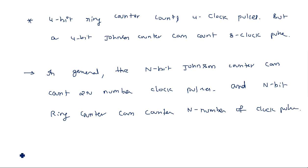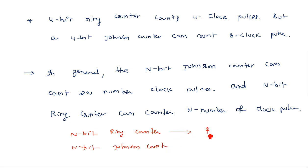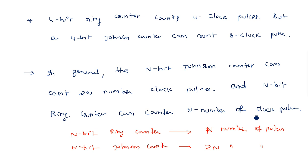This is very important: an n-bit ring counter counts n clock pulses, and an n-bit Johnson counter counts 2n clock pulses. Both are also known as shift register counters because a shifting operation is performed in both counters.